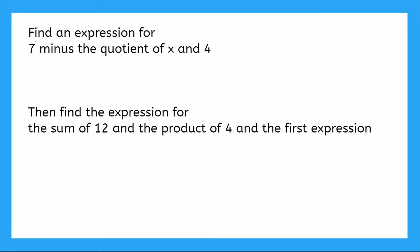So let's read this whole problem out. It says find an expression for seven minus the quotient of x and four, then find the expression for the sum of 12 and the product of four and the first expression. So the first expression then is going to be whatever I find up here. Okay, so whatever this one is, that's what my first expression is. So let's do this first expression.